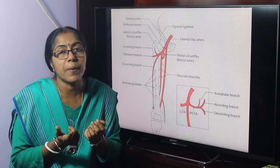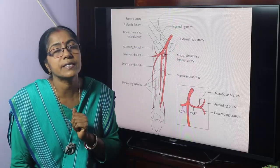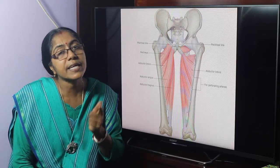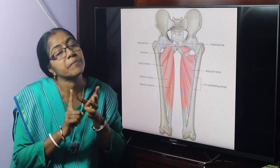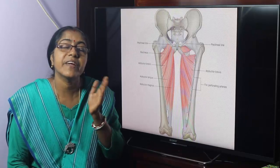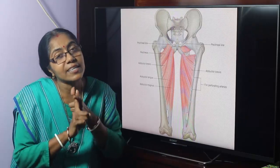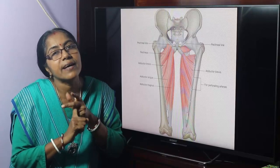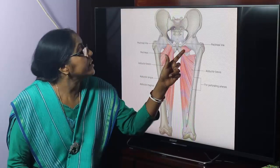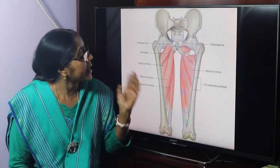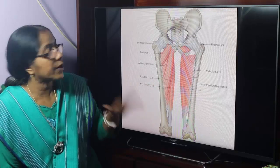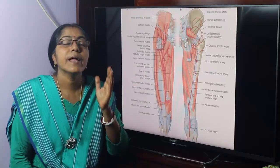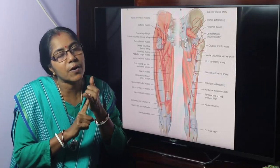The medial compartment, or adductor compartment, has its own muscles, vessels, and nerve. The adductor compartment — the very name indicates adduction. The muscles are: adductor longus, adductor brevis, and adductor magnus, as well as gracilis, obturator externus, and pectineus muscle.